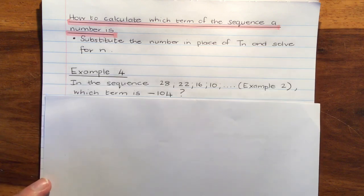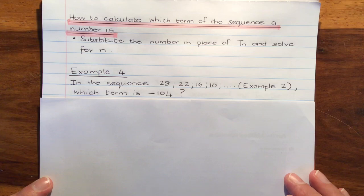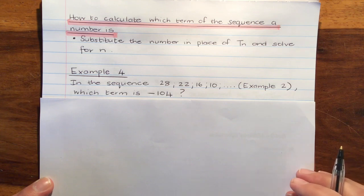Example 4. In the sequence 28, 22, 16, 10, that's actually example 2 that I'm reusing. Which term is negative 104?